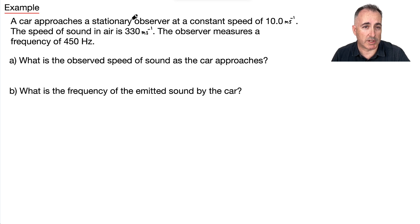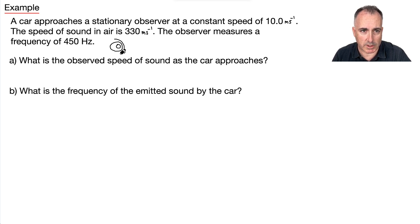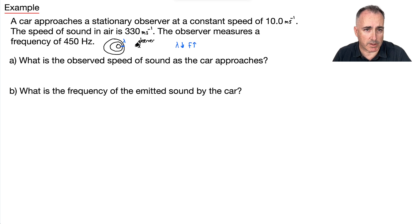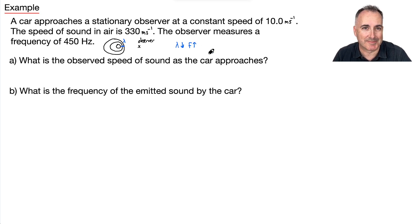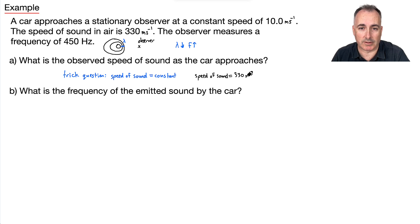Here's an example: a car is approaching a stationary observer at a constant speed of 10 meters per second. The first question asks: what is the observed speed of sound as the car approaches? This is actually a trick question — the speed of sound is going to be constant. It'll just be 330 meters per second. The speed of sound is constant.